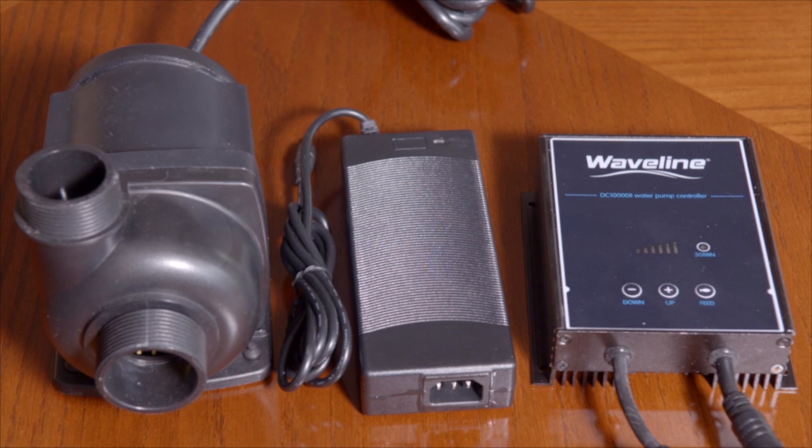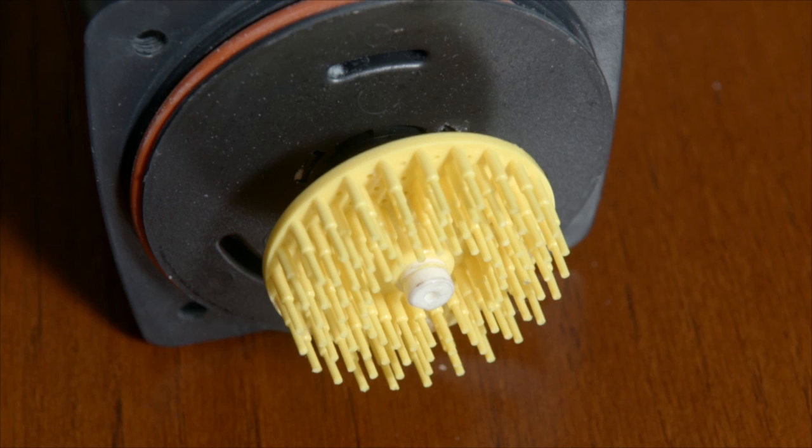Essentially, the pump block is just muscle, and the controller is the brain. Here is what the inside of the pump looks like, with the mushroom-shaped impeller. This design allows more pressure than an open blade impeller.